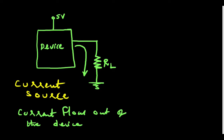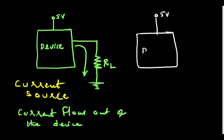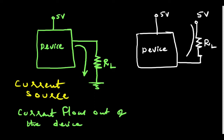Then what about current sinking? Similarly, we have a device. I have connected one end of the load directly to the 5-volt supply. The current is flowing from the power supply into the device. This is current sinking — that is, current is flowing into the device.